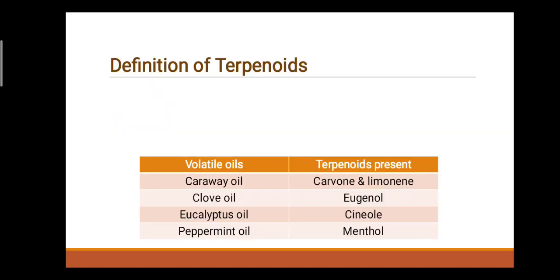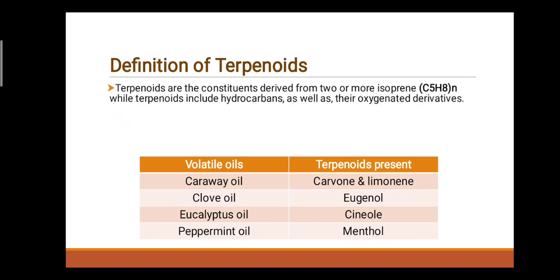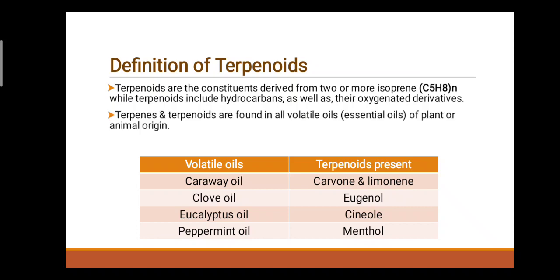Next point: Definition of Terpenoids. Terpenoids are constituents derived from two or more isoprene units (C5H8)n, where n is the number of isoprene units. Terpenoids include hydrocarbons as well as their oxygenated derivatives. Terpenes and terpenoids are found in all volatile oils, meaning the essential oils of plant or animal origin.